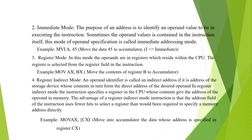The third mode is Register Mode. In this mode, the operands are in registers which reside within the CPU. The register is selected from the register field in the instruction. Example: move AX, BX — move the contents of register B to the accumulator.